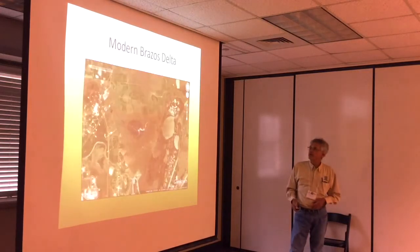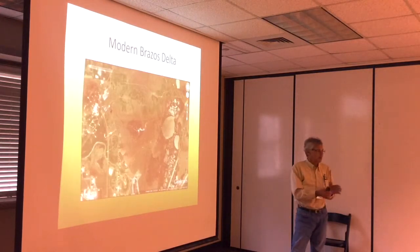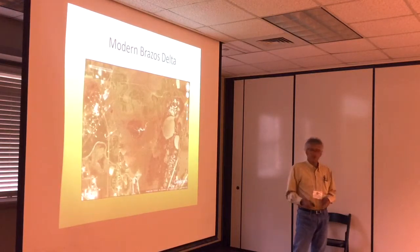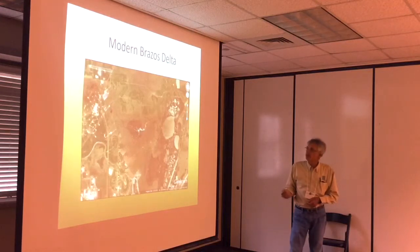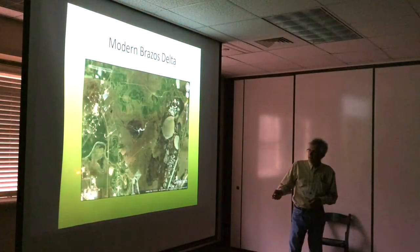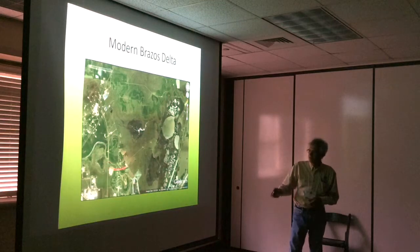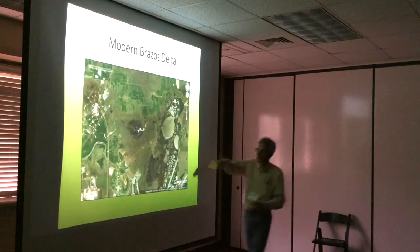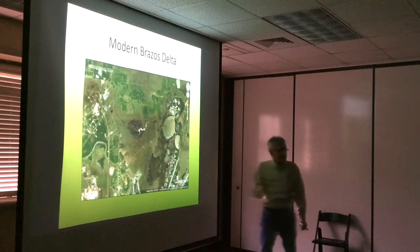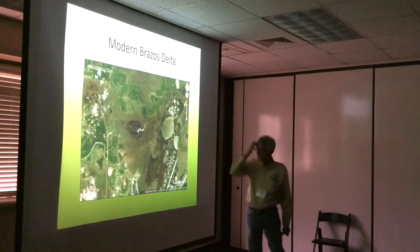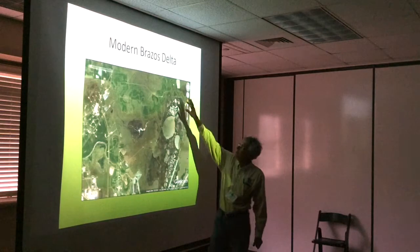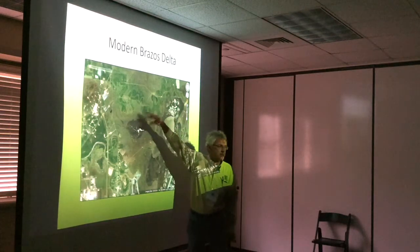The whole coastal prairie is really made up of old river deposits layered one on top of another. Here's the current modern Brazos delta, and you can see old channels — Big Slough, Oyster Creek — all areas where the river used to flow. It's just changed course over time. Notice it's bright green along these old channel courses.